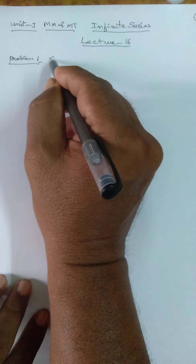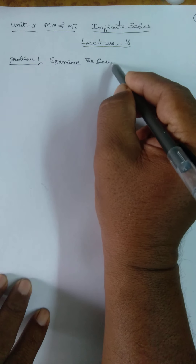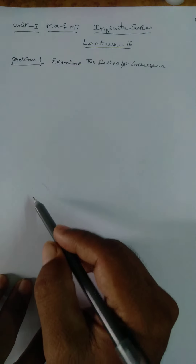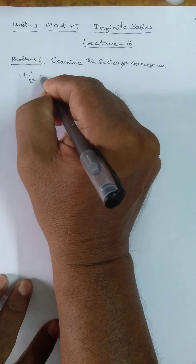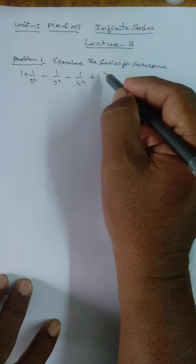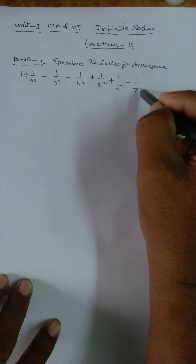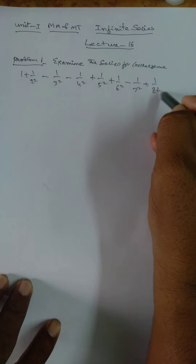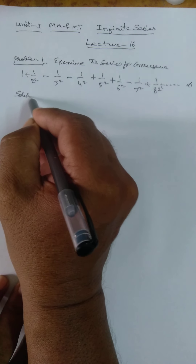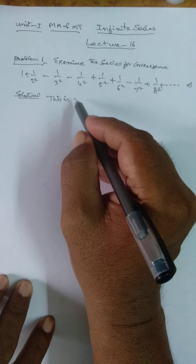Problem 1: Examine the series for convergence. The series is 1 + 1/2² − 1/3² − 1/4² + 1/5² + 1/6² − 1/7² + 1/8² + ... and so on to infinity. Clearly, positive terms and negative terms are present, so this is clearly an arbitrary term series.